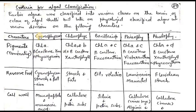Let's look at the pigments. In Cyanophyceae, phycocyanin and phycoerythrin are present. Chlorophyll A and C is the dominating one in different groups. These are the pigment-based classification details that are easy to understand.